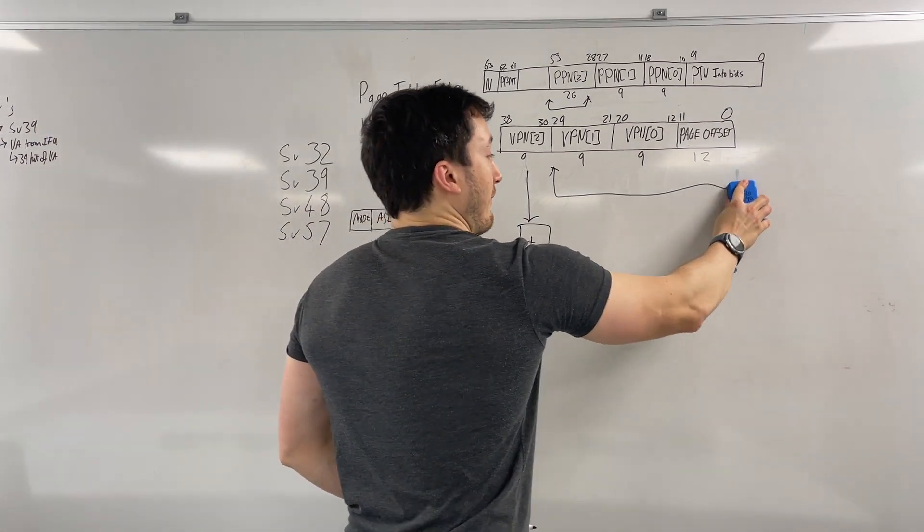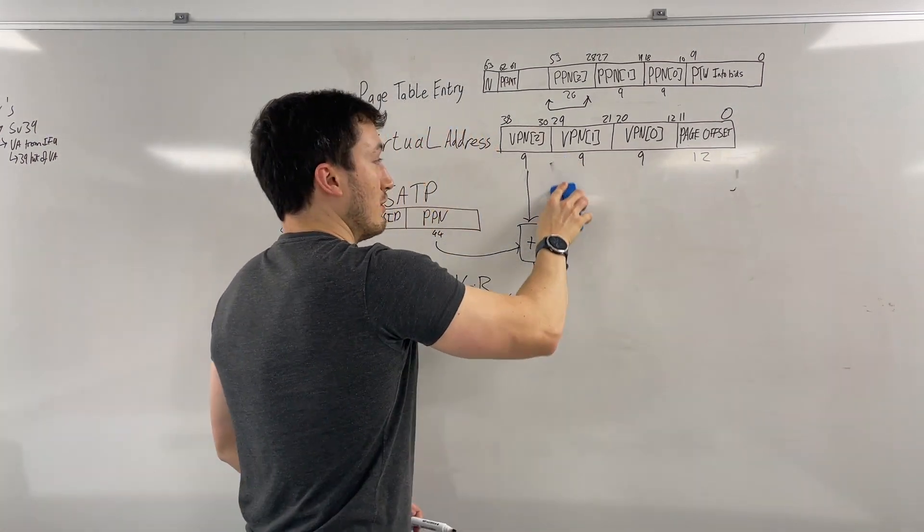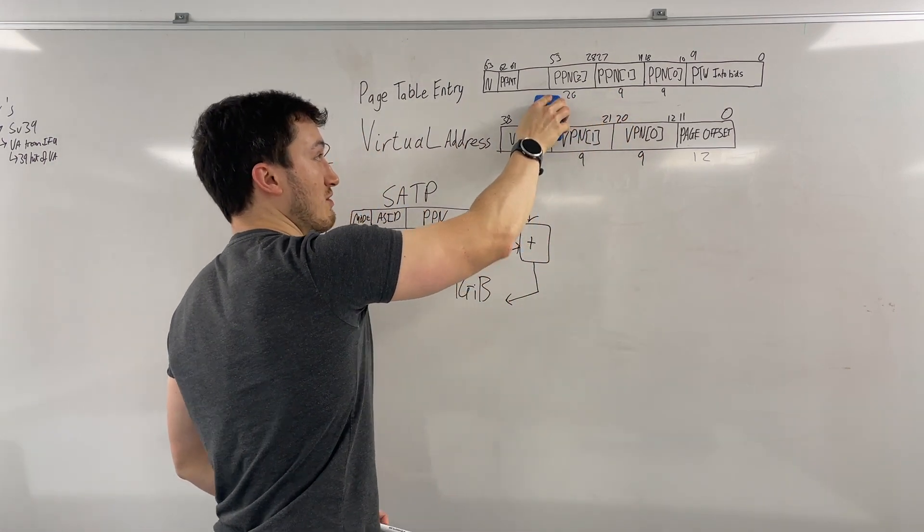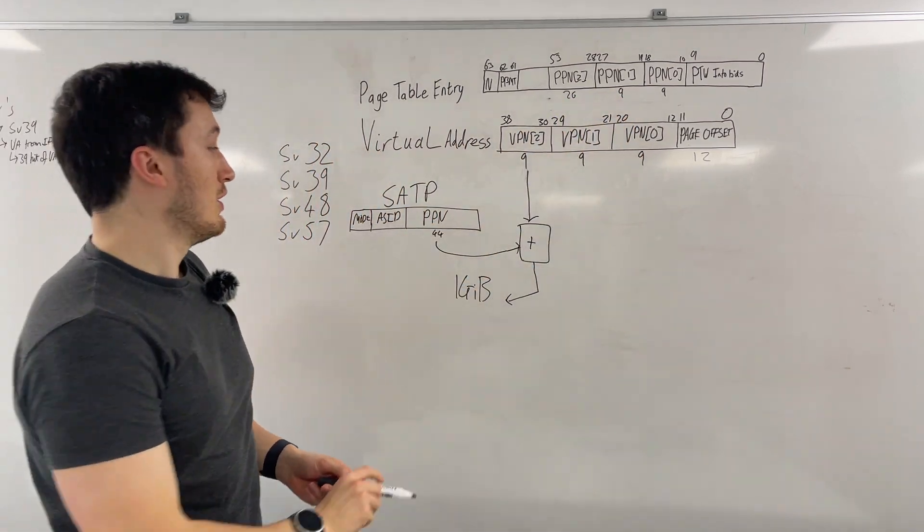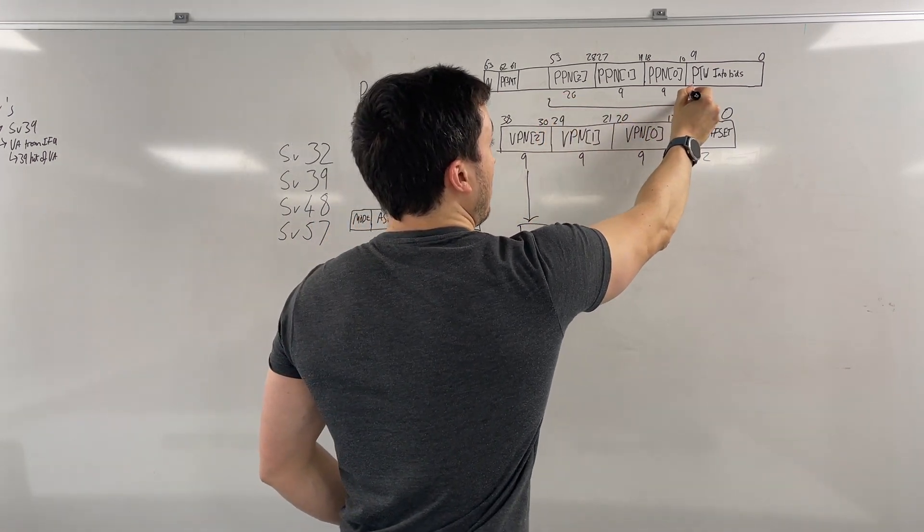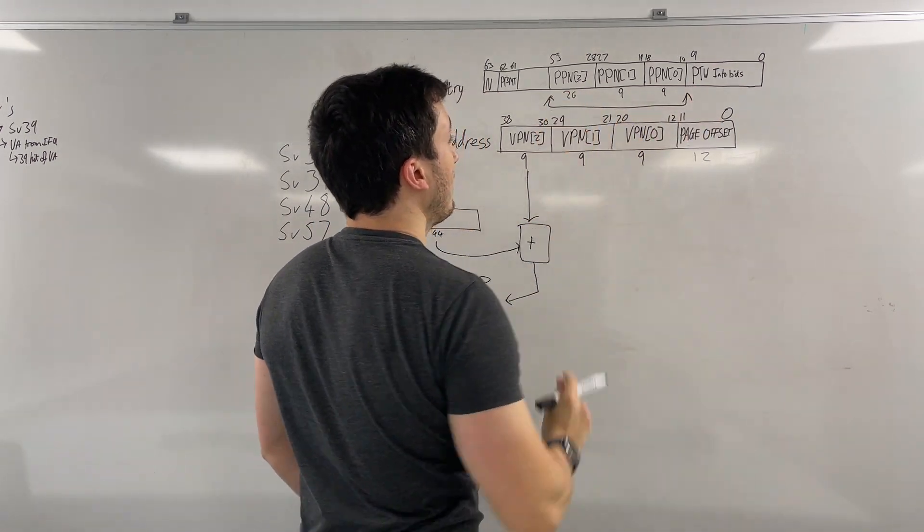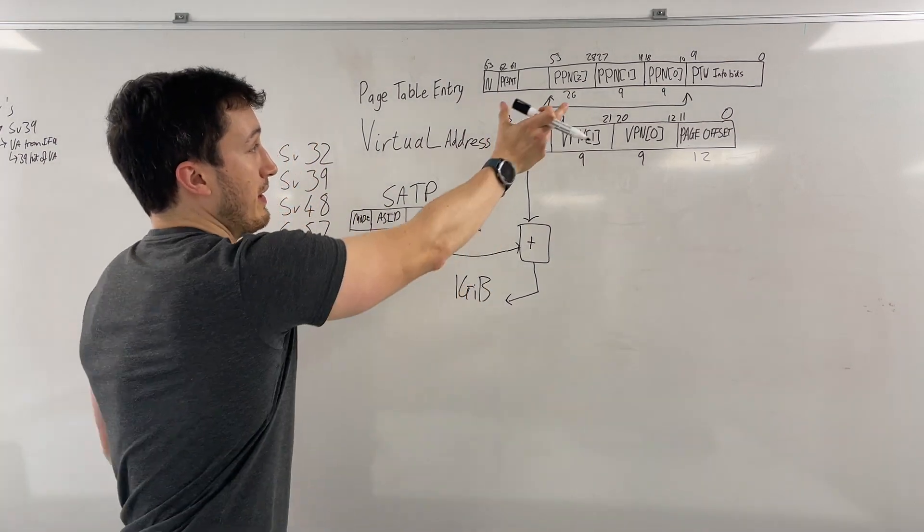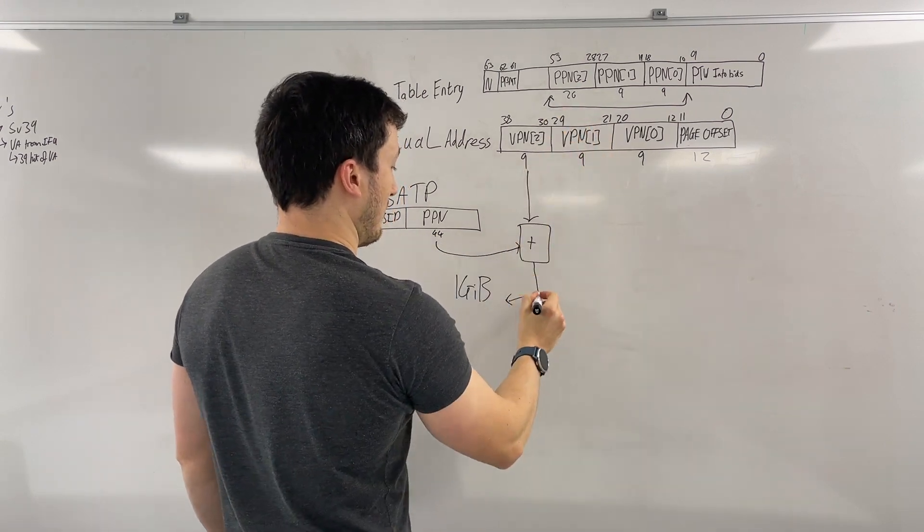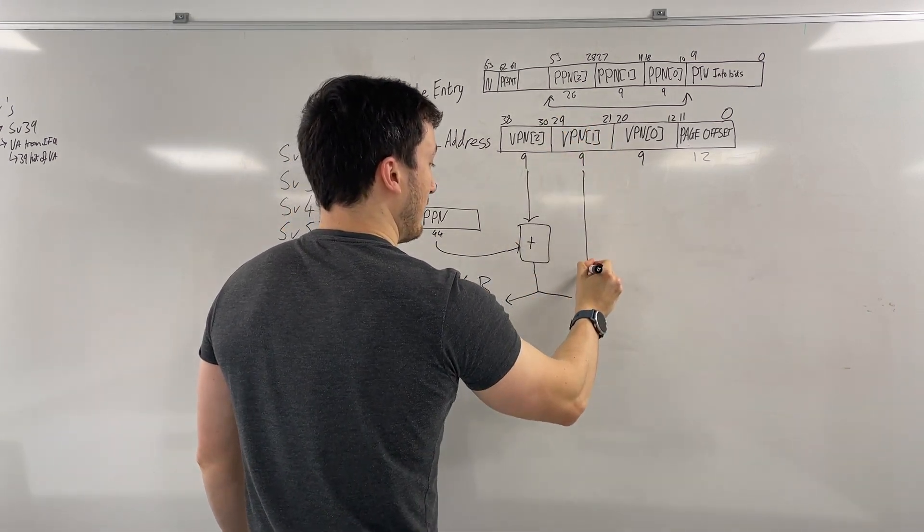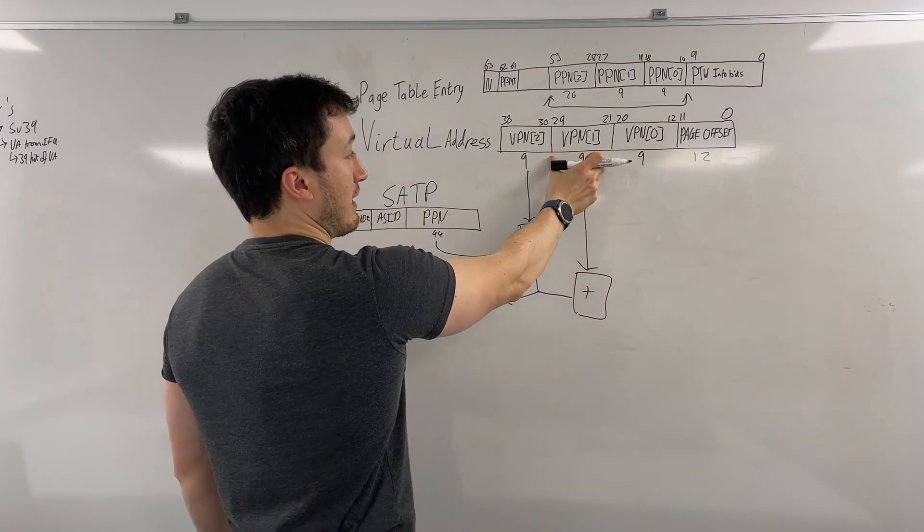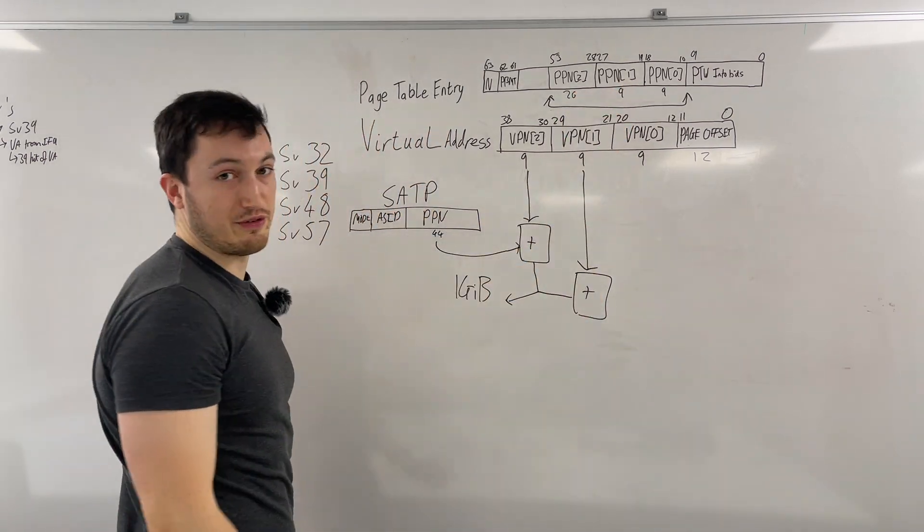However, if it's a non-leaf page, then we go to the next iterative step of the page table walk, which means taking the full PPN that was stored in the page table entry. And then this effectively replaces this part now. So you would take that and you go to the next bit and you add the next nine bits of the address to the PPN that you found in memory.